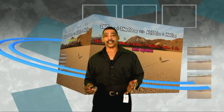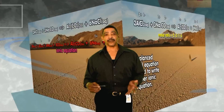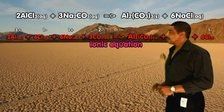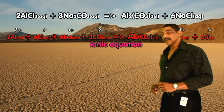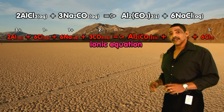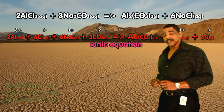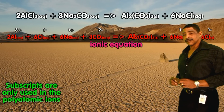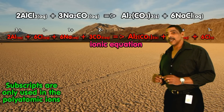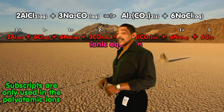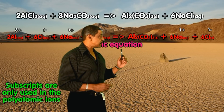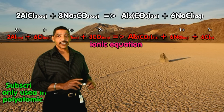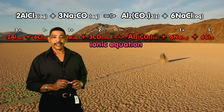When writing an ionic equation we simply separate the soluble compounds. So we write 2Al³⁺ plus 6Cl⁻ plus 6Na⁺ plus 3 carbonate anions to yield the compound aluminum carbonate plus 6 sodium cations plus 6 chloride anions.